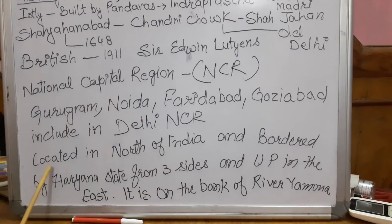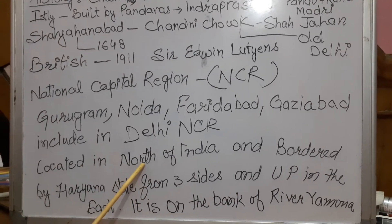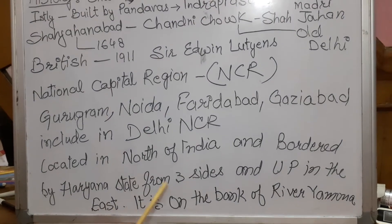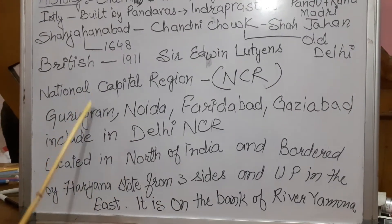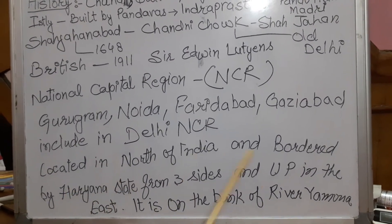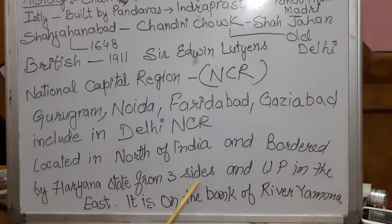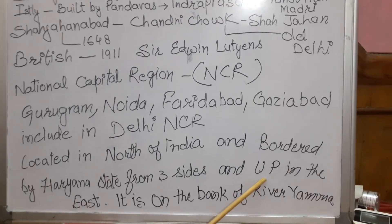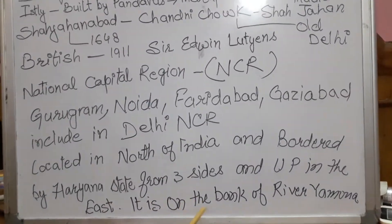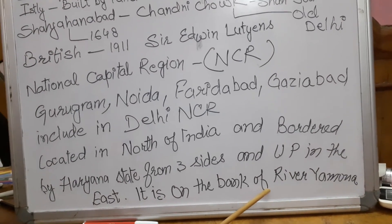Now we will talk about the location of Delhi. Delhi is located on the north side of India and it is bordered by Haryana state from three sides. On the eastern side, it is bordered by UP, meaning Uttar Pradesh. Delhi is situated on the bank of the river Yamuna.